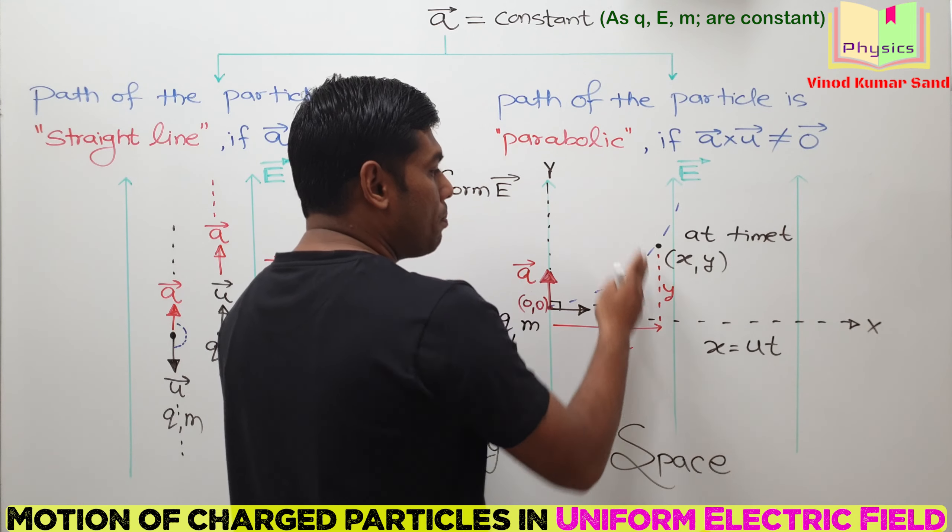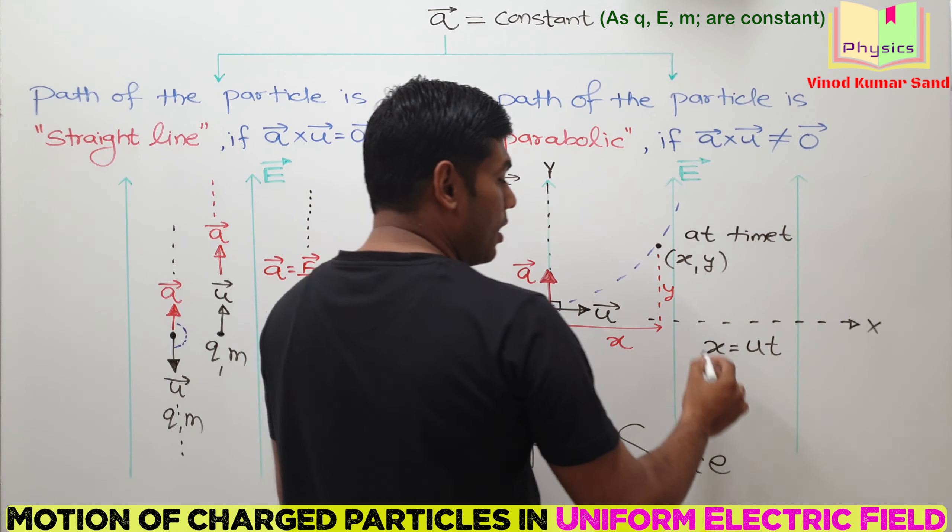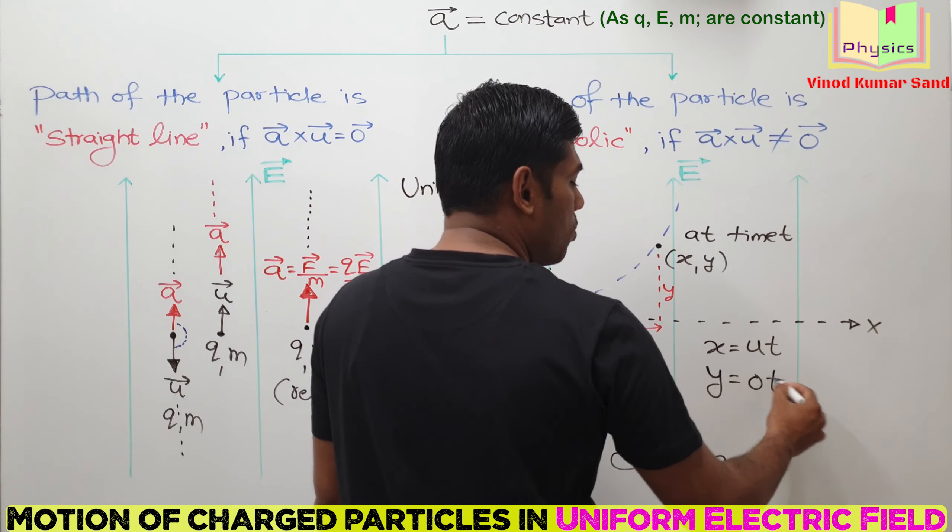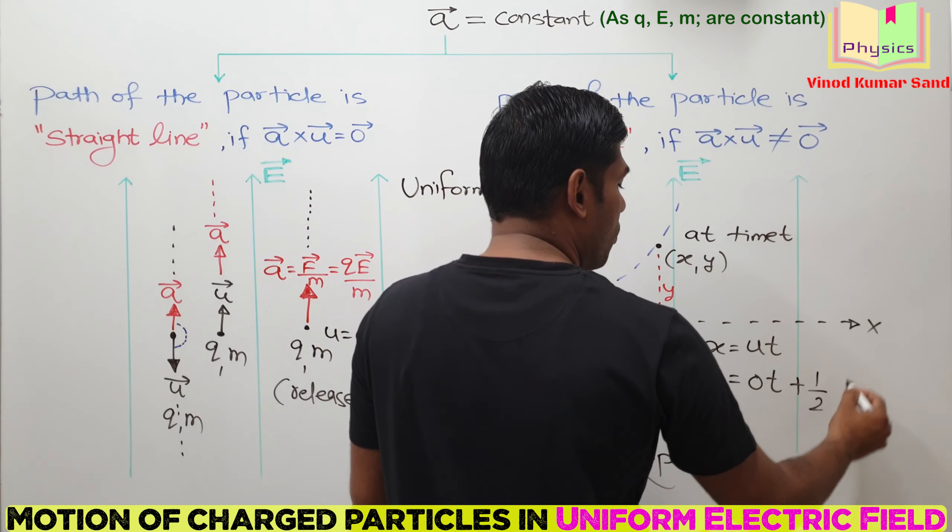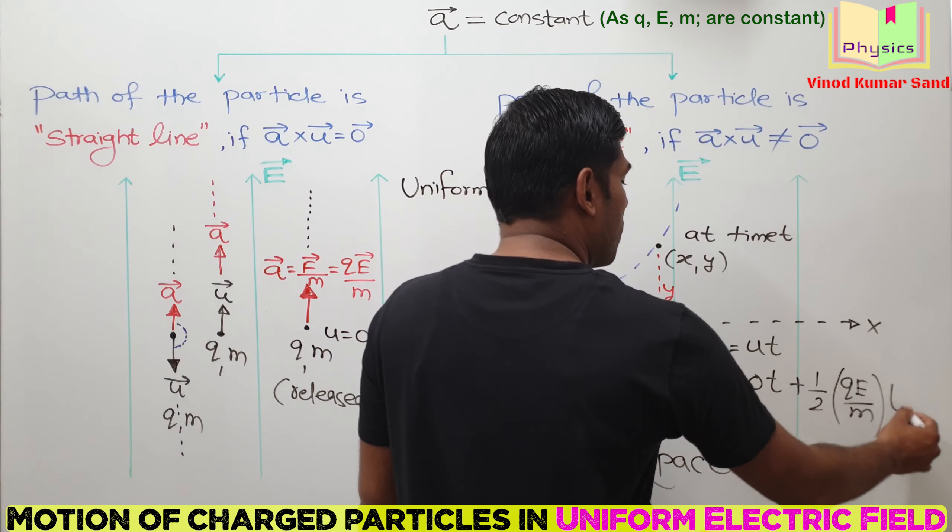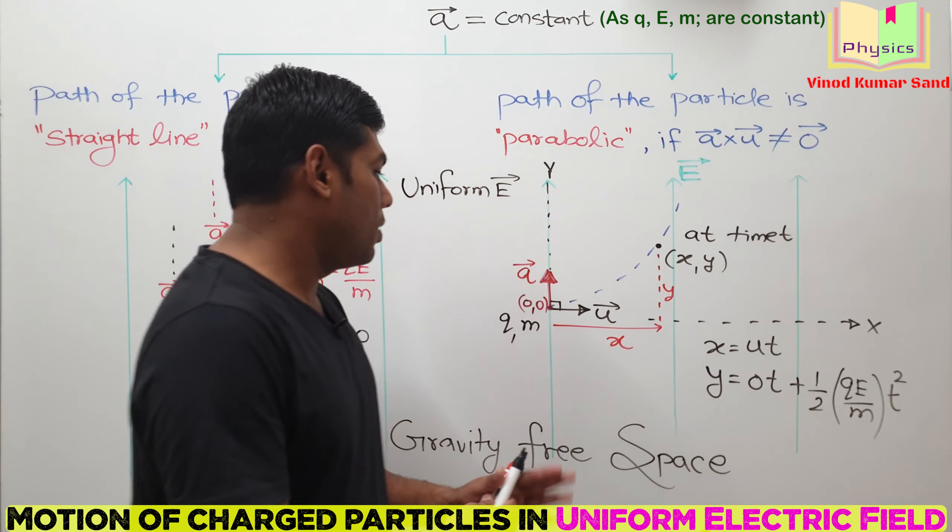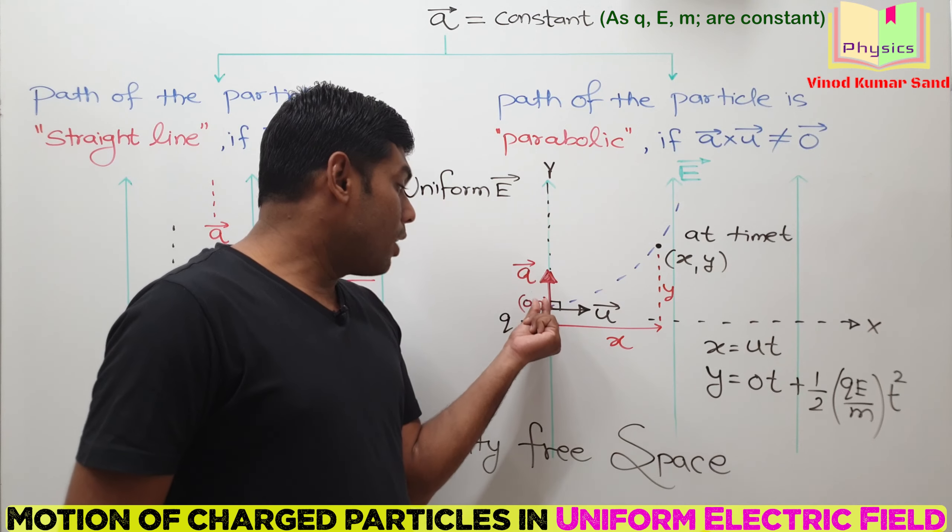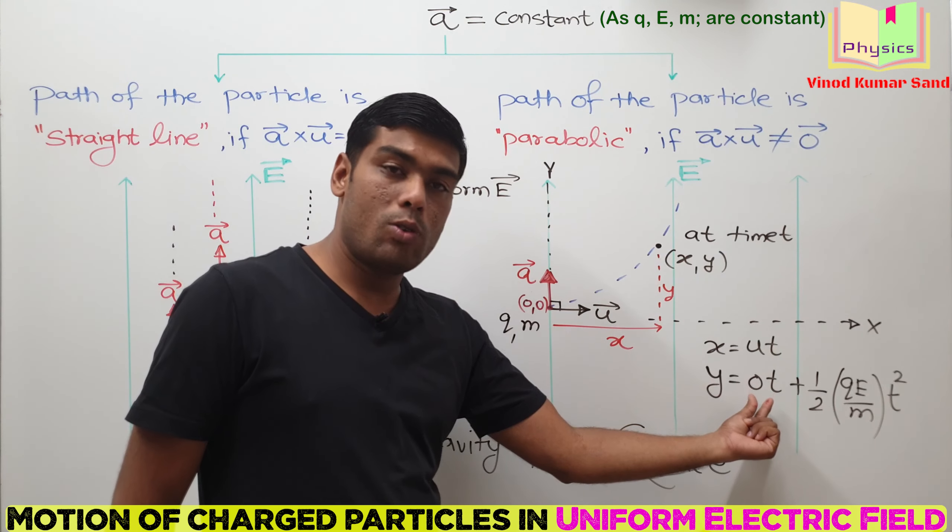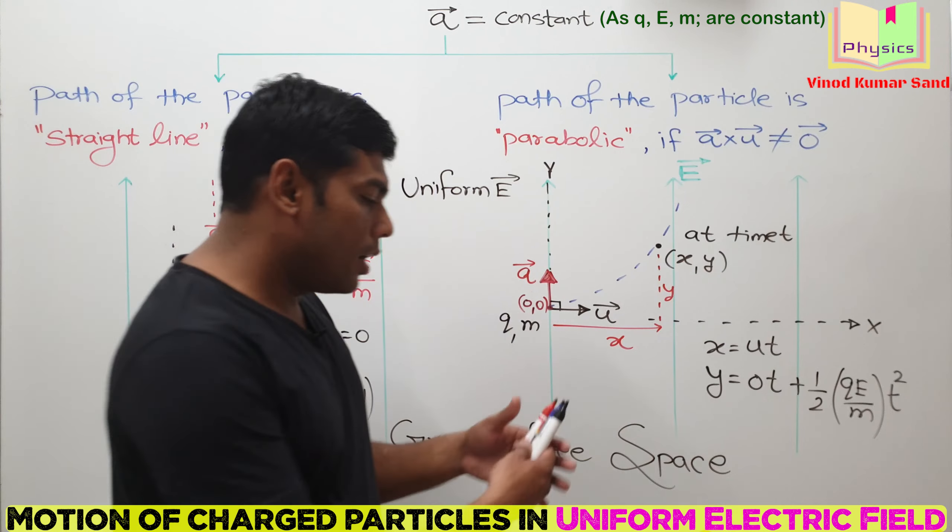In y direction, the particle is being accelerated. So y will be equal to 0 times t plus half QE by m multiplied with t square. In y direction, the initial velocity is 0, so put 0 here. Acceleration is QE by m for this charged particle and then t square. Now we name this as equation number 1, we name this as equation number 2.